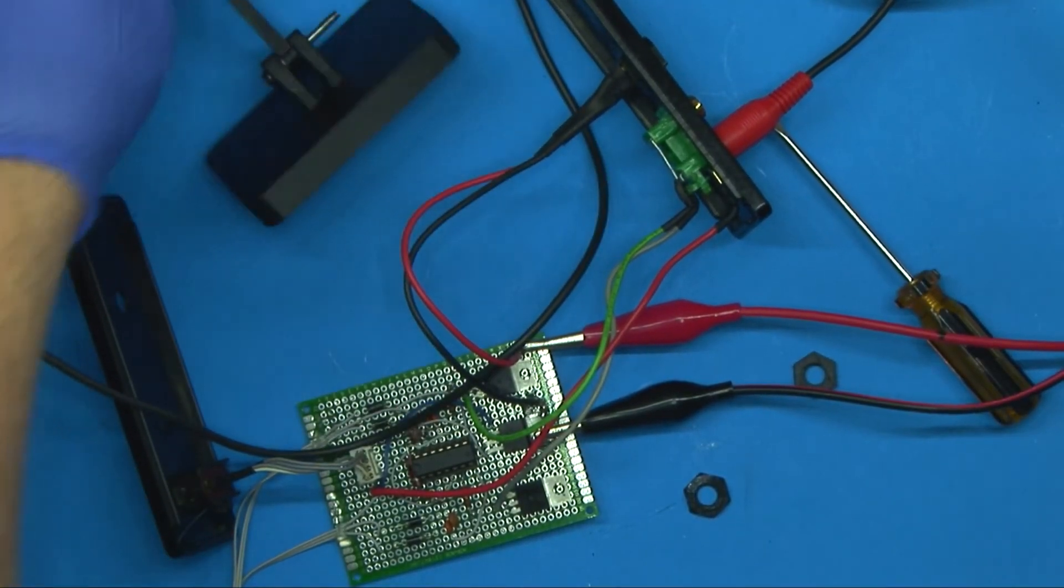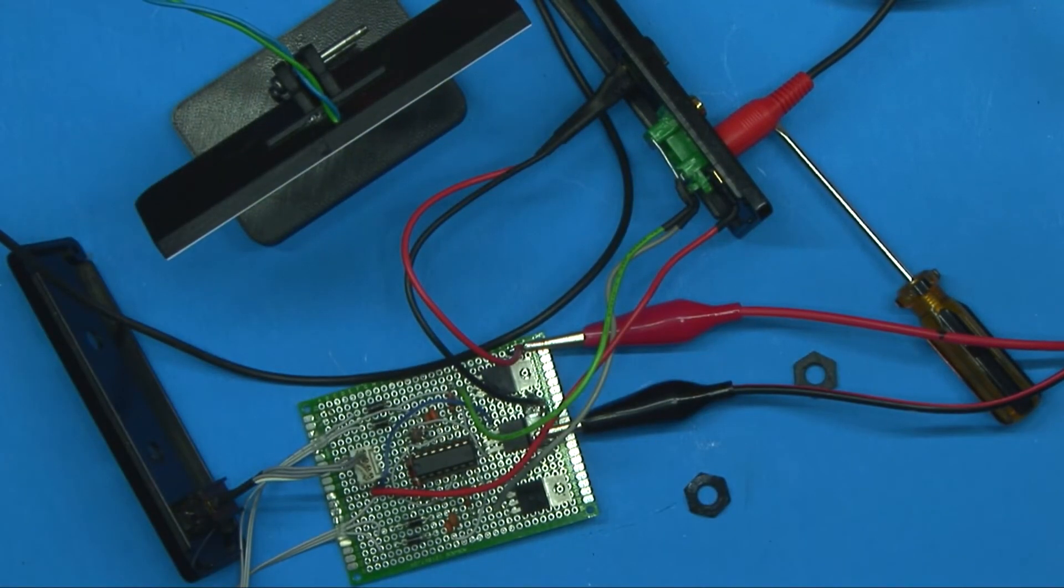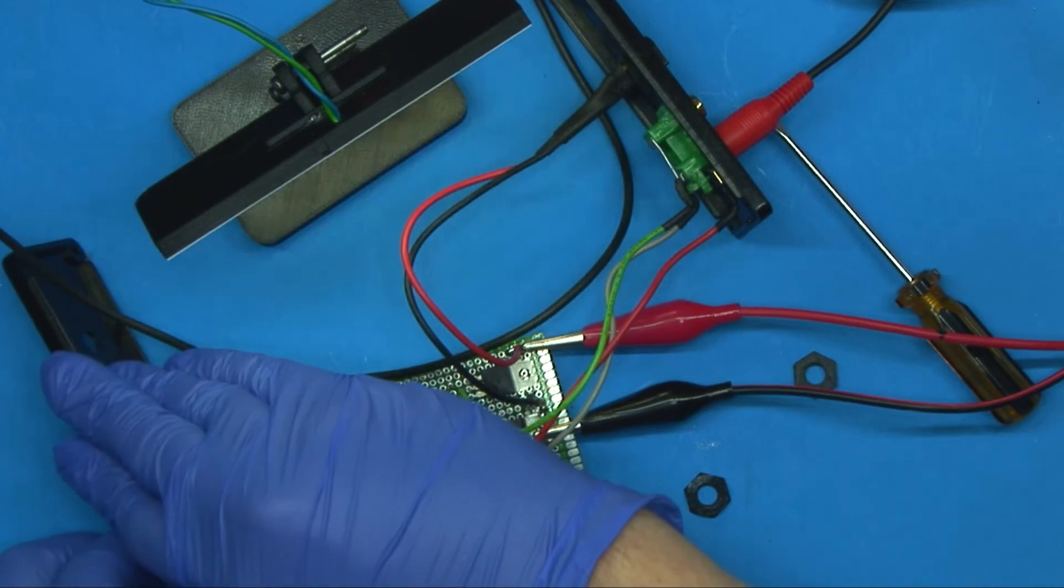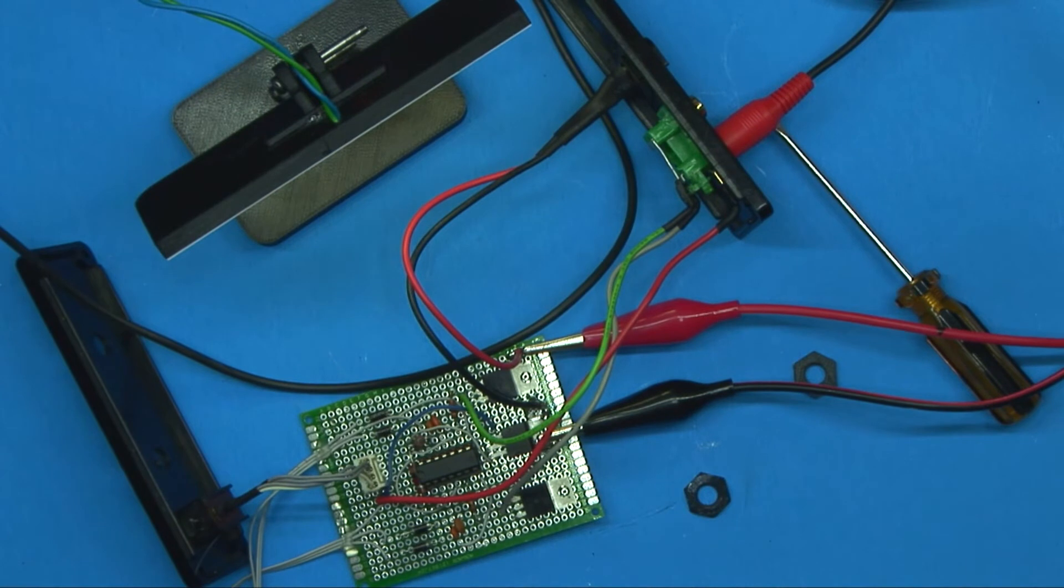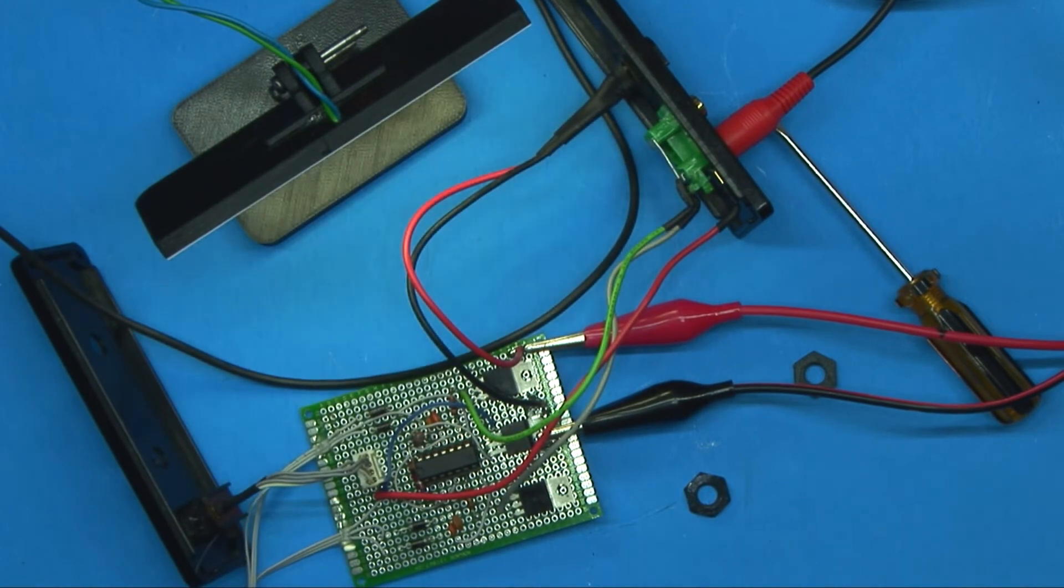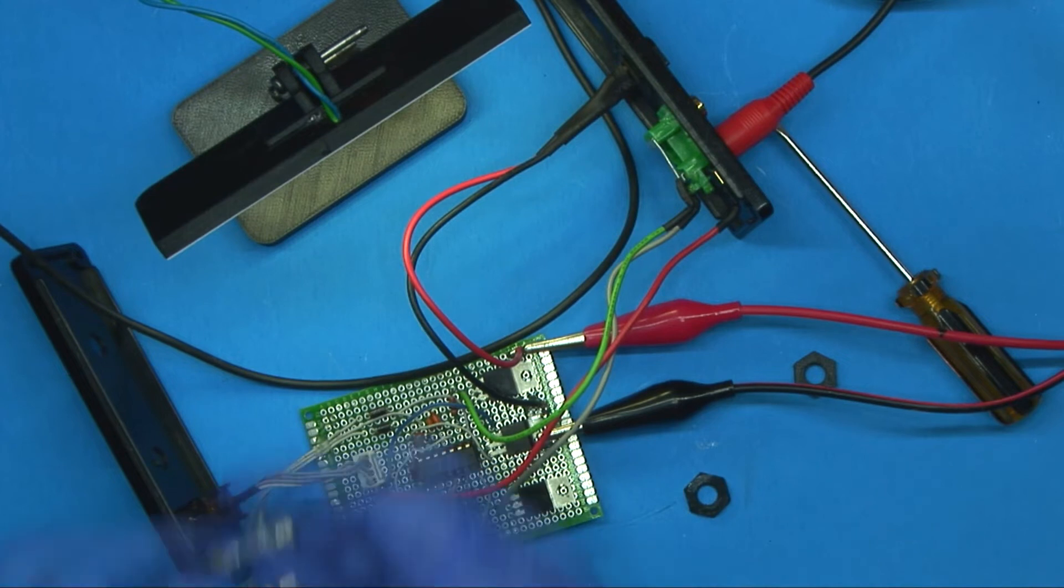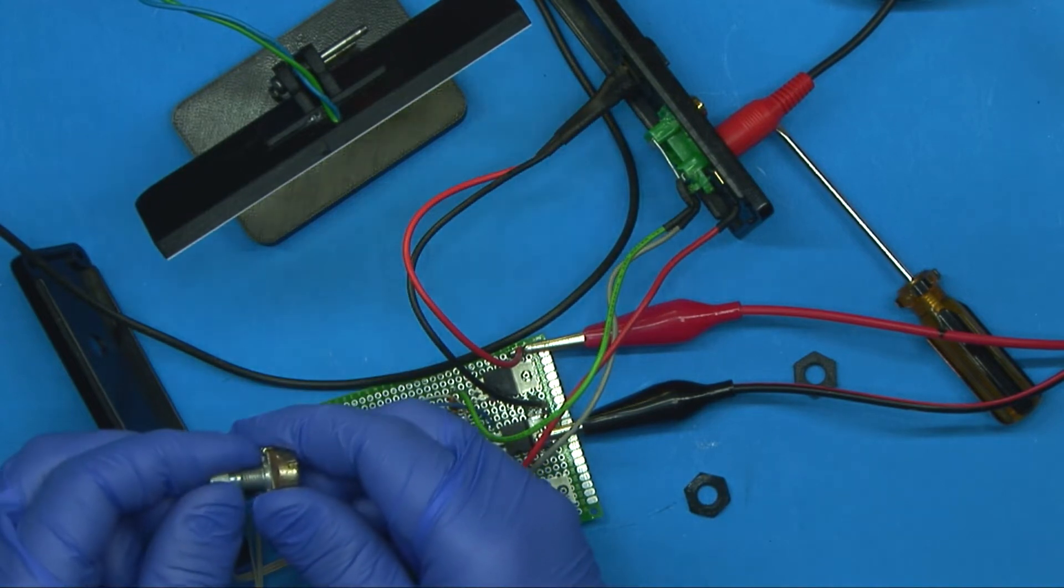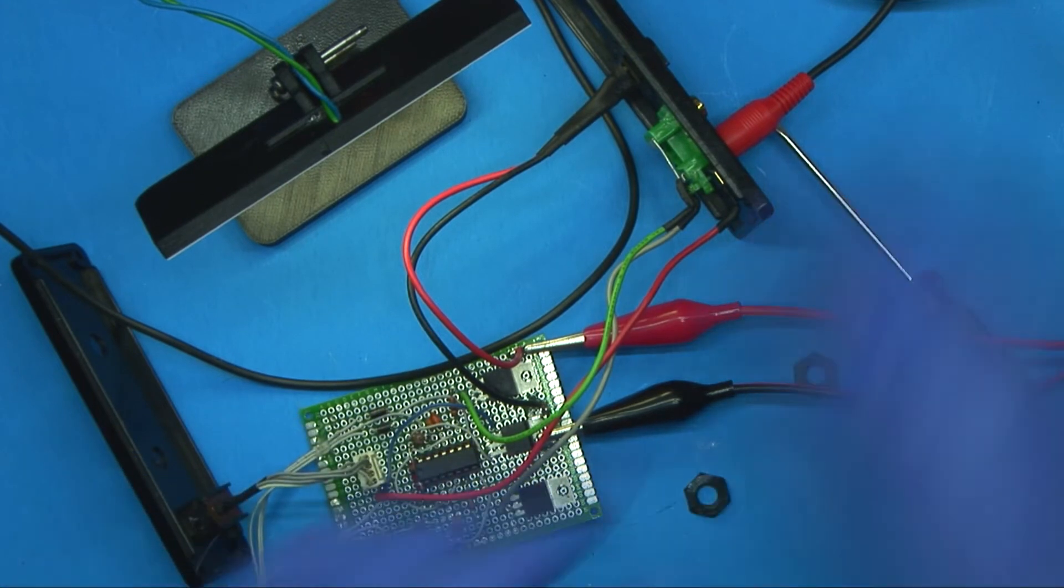And here is our light. And we'll aim that down so it doesn't blind the camera. Let's turn it on. And we'll see which channel this is. You'll see it dims. And all I'm doing is turning the potentiometer. And let's go to the other channel.